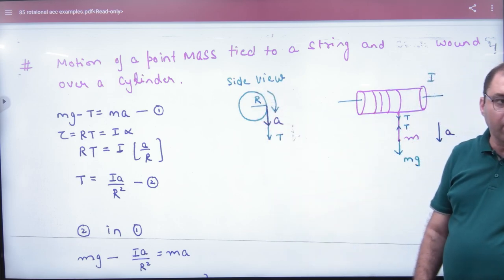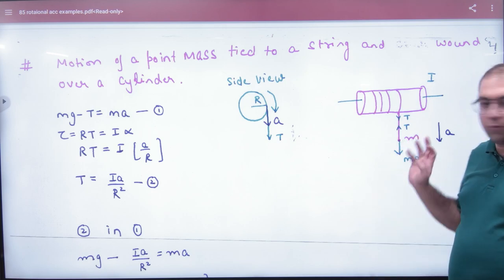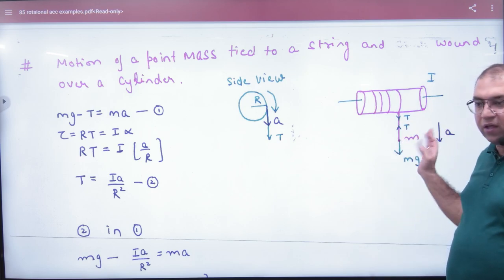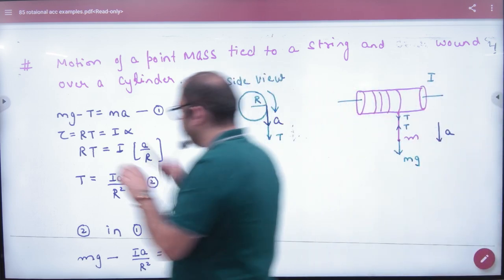Radius is R. Now one equation is very clear. What will happen to this point mass? Mg minus T is Ma. So Mg minus T is Ma.